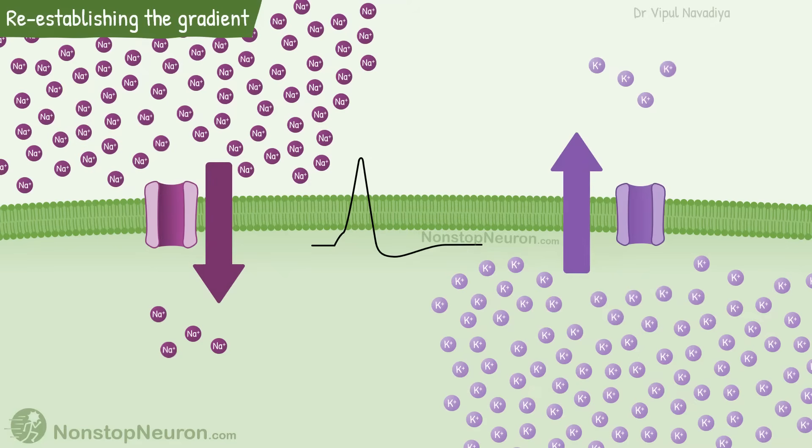In fact, for a single action potential, this change is so small that it cannot even be measured. Millions of action potentials can be passed before the gradient reduces to a point where action potential can no longer be generated.